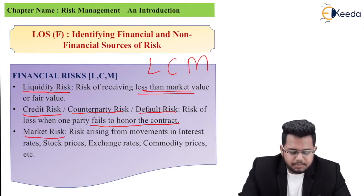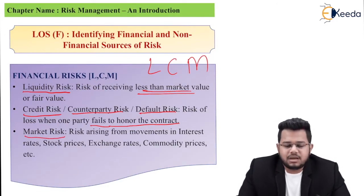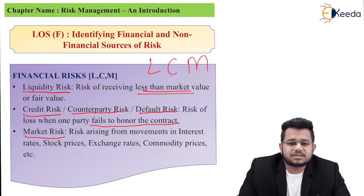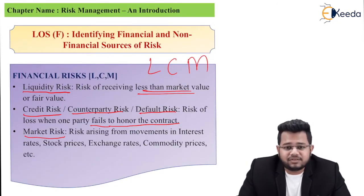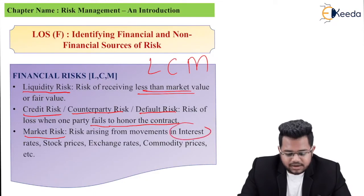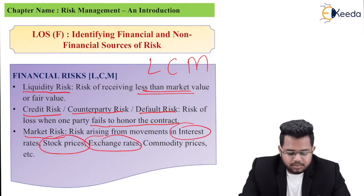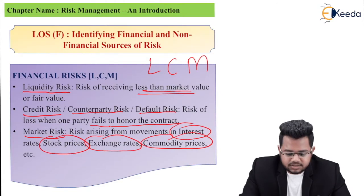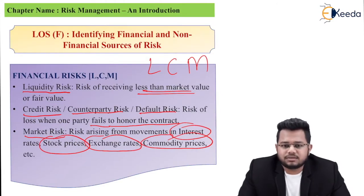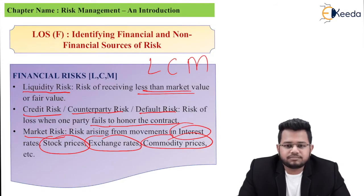The last financial risk is market risk. Market risk is basically that systematic risk which affects everyone. There is a risk arising from movements in interest rates, stock prices, exchange rates, commodity prices, etc. These are market variables — if these variables fluctuate, then it is a risk.